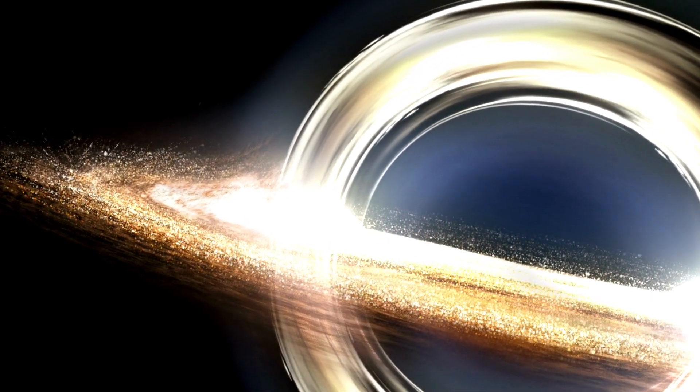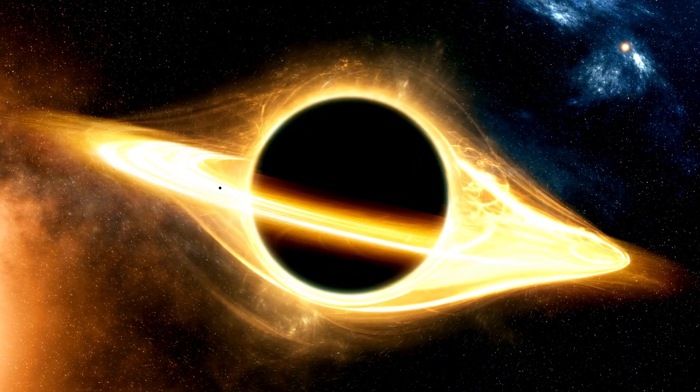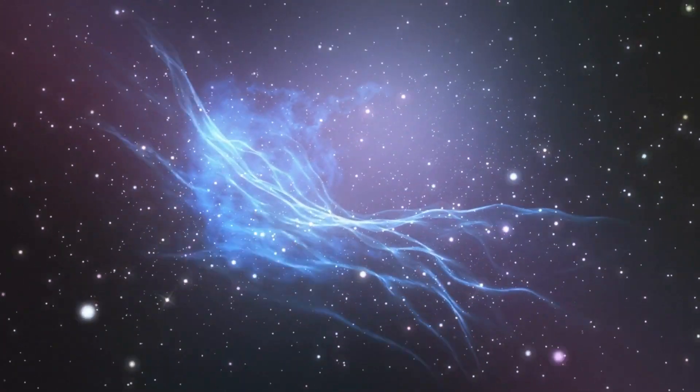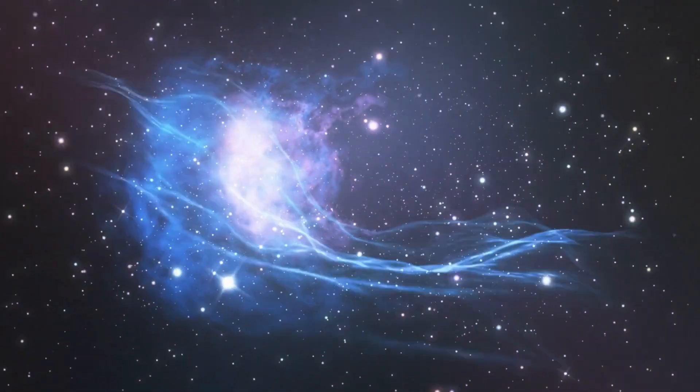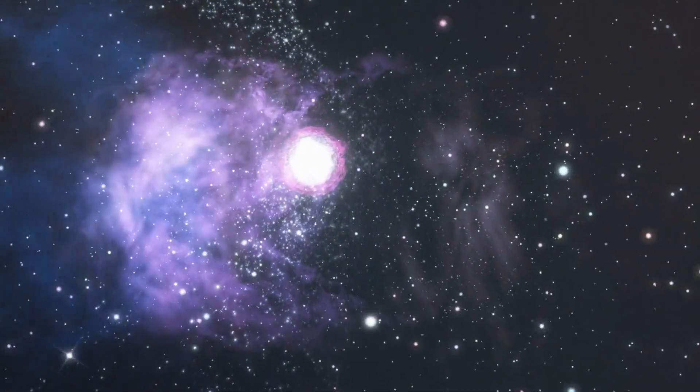Meet TON 618, the heavyweight champion of black holes, weighing in at a whopping 40 billion solar masses. But even this titan has its limits. As these giants feast, they release tons of radiation, making it harder for more food to fall in. It's nature's way of saying, hey, slow down on the snacks.